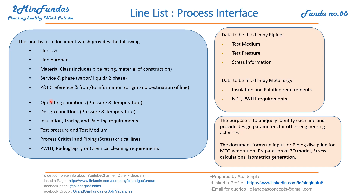Operating temperature and pressures are also part of the line list. Design conditions are mentioned, along with insulation, tracing, and painting requirements. Test pressure, test medium, process critical and piping stress critical — all of that we mark in the line list and it becomes part of this document.